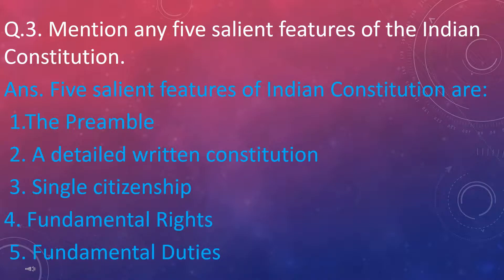Question number three: we have studied ten salient features of the Indian Constitution in this lesson, and we have to write down any five. The five salient features are: number one, the preamble; number two, a detailed written constitution — as we know the Indian Constitution is a written constitution; number three, single citizenship; number four, fundamental rights; and number five, fundamental duties.